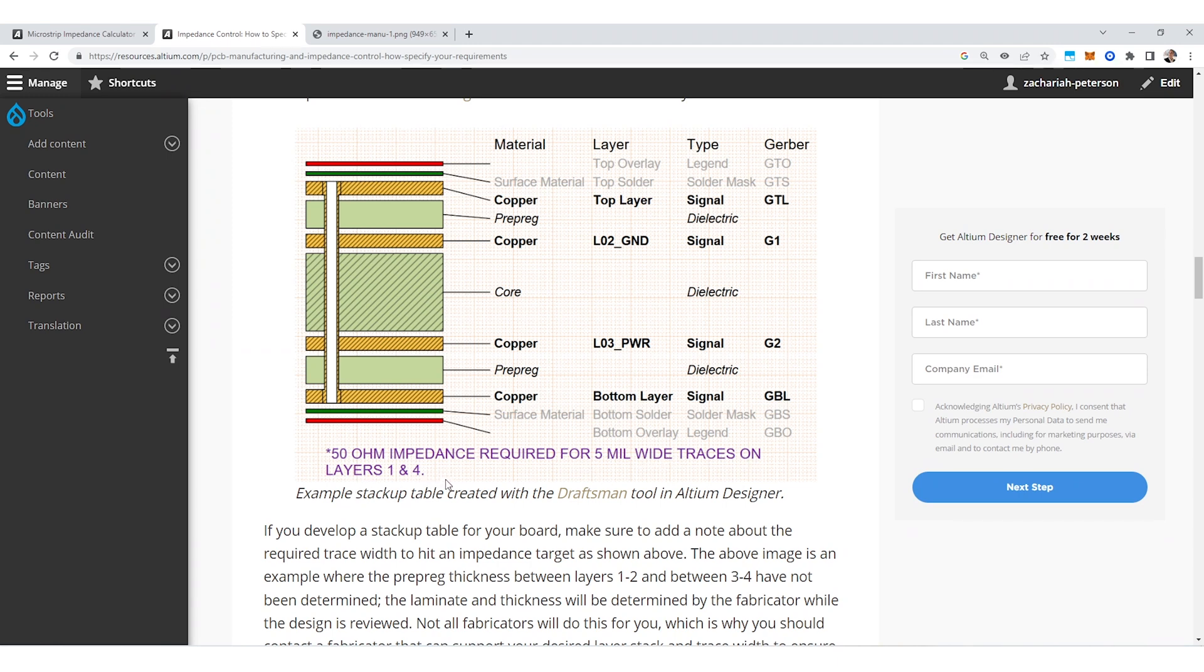This is what tells your fabrication house the target that they need to hit for this stack-up and then they can go and mix and match various materials to then hit that particular impedance target. What they're probably going to come back with on this type of stack-up is pretty simple. It's going to be around a DK of 4 with an outer layer thickness of about 2.5 mil. They might use something different depending on what they have available. And then what they're going to do is they're going to make up the rest of the dielectric thickness using the core layer. So the other thing that you would want to specify here is of course the total board thickness. That's how they're going to then figure out what the core layer thickness is going to be.